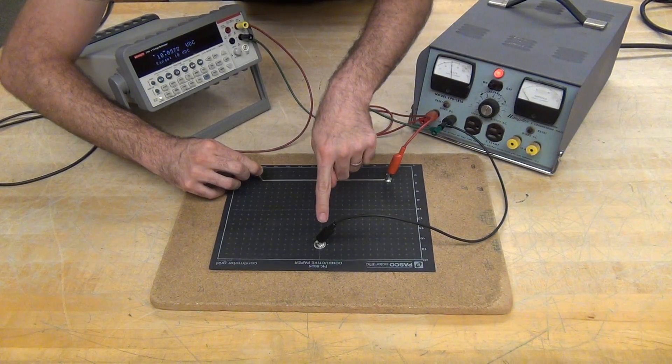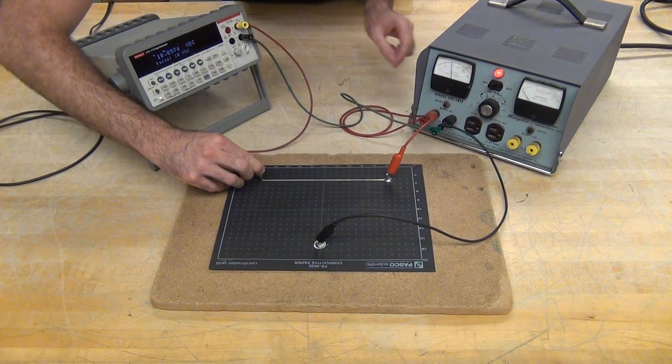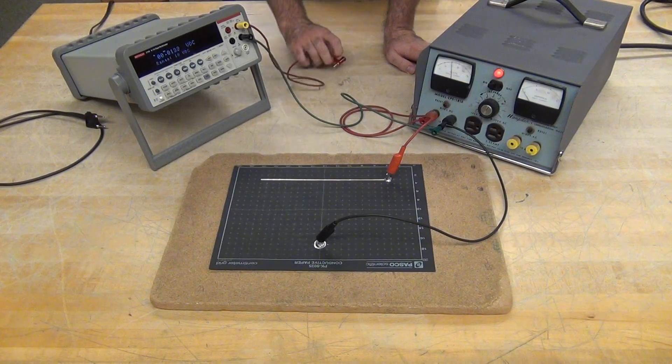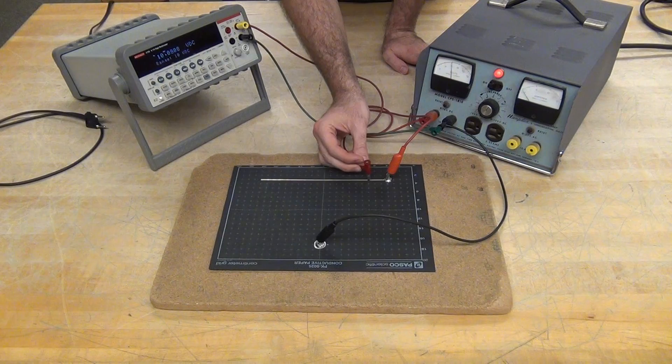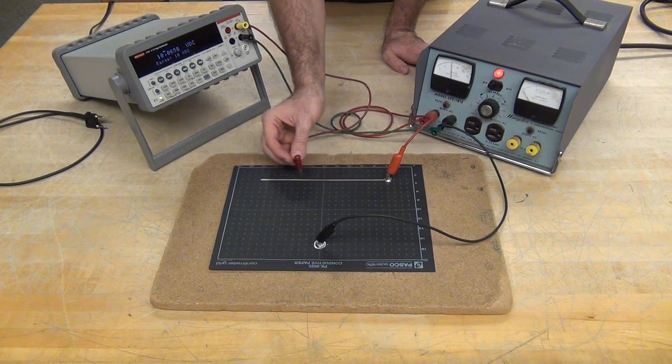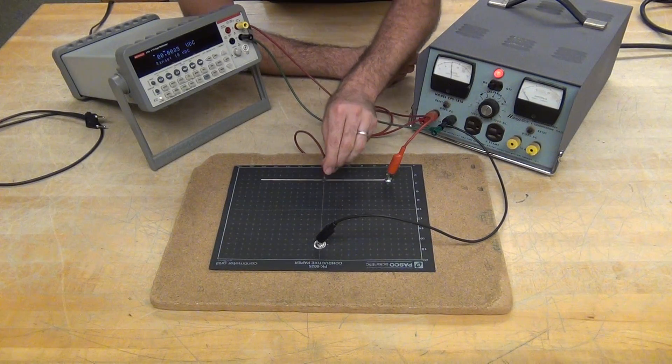10 volts between this point and this point, this point being electrically connected down there. Now I can find lines of equal potential. Everywhere along here should be an equal potential. That's an easy one. And then I'm going to find another one.